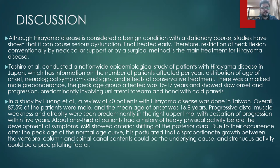Tashiro et al. conducted a nationwide epidemiological study of Hirayama disease in Japan, reporting marked male preponderance, peak age group under 17 years, slow onset and progression predominantly involving unilateral forearm and hand with cold paresis. In a study by Huang et al., a review of 40 patients in Taiwan showed 87% were male with a mean age of onset of 16.8 years. Progressive distal muscle weakness and atrophy were seen predominantly in the right upper limb, with cessation of progression within five years. About one third had a history of heavy physical activity before symptom onset. MRI showed anterior shifting of the posterior dura, and disproportionate growth between the vertebral column and spinal canal contents is postulated as the underlying cause, with strenuous activity as a precipitating factor.